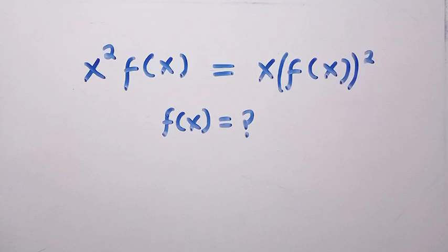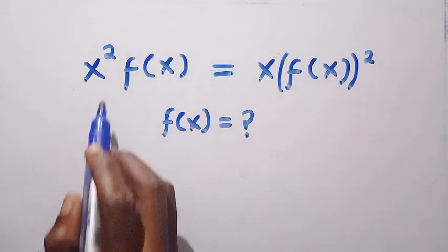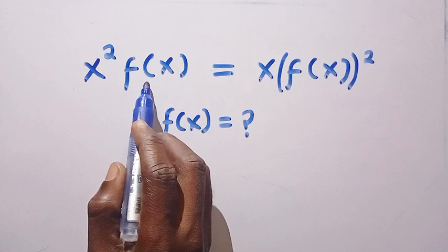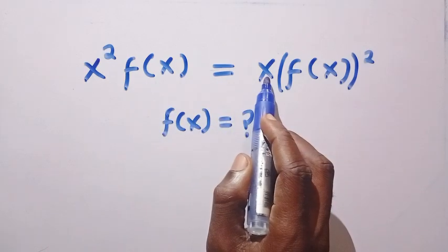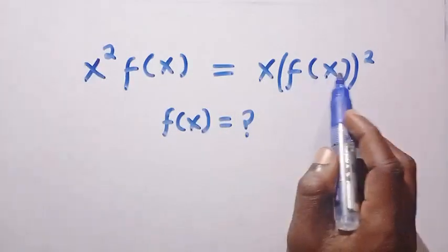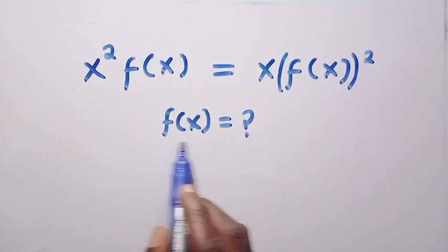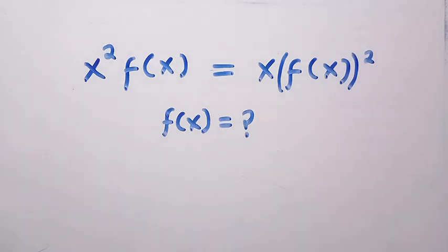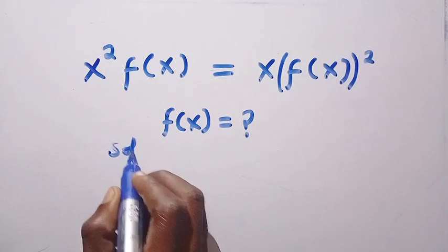Good day viewers, you are welcome. How to solve these nice functional equations, where we have x squared multiplied by f of x equals x multiplied by f of x all squared. What is f of x? So we can pause this video and give it a try. Let's get into it and consider the solution here.